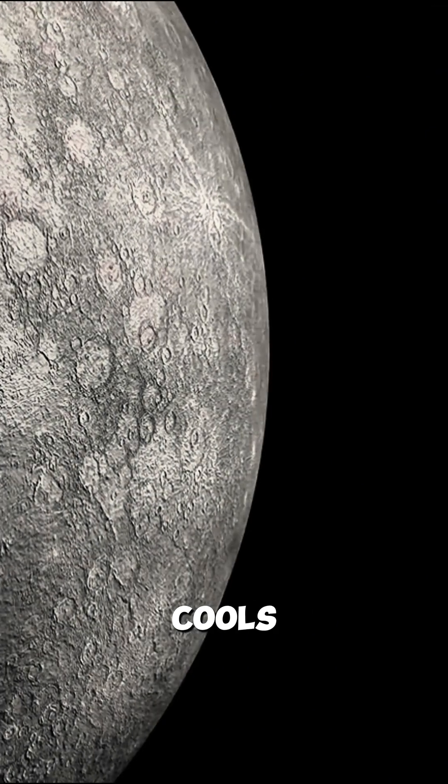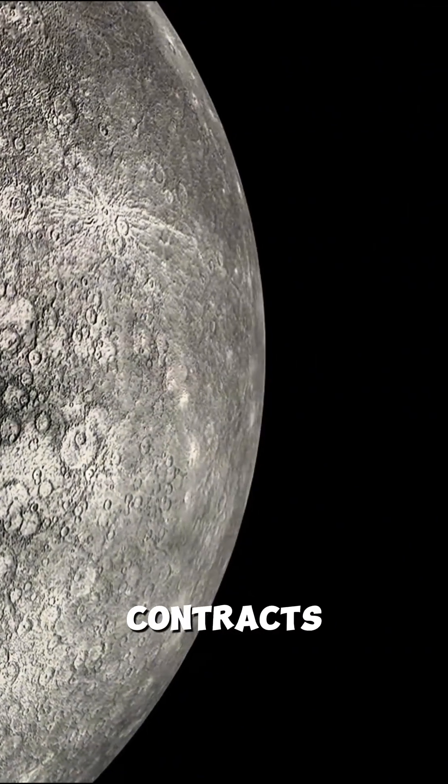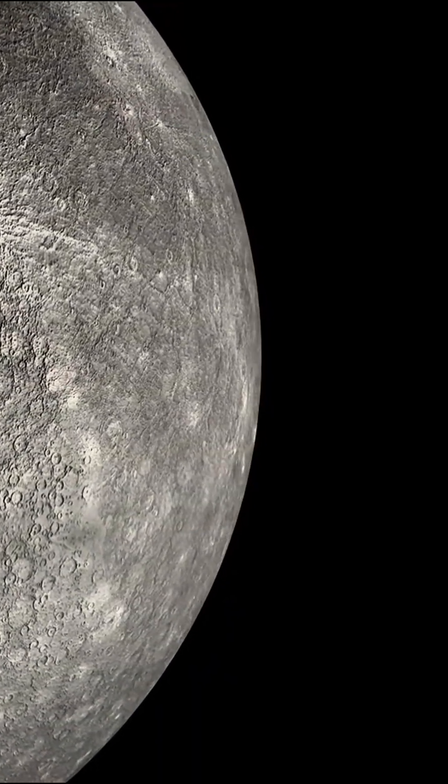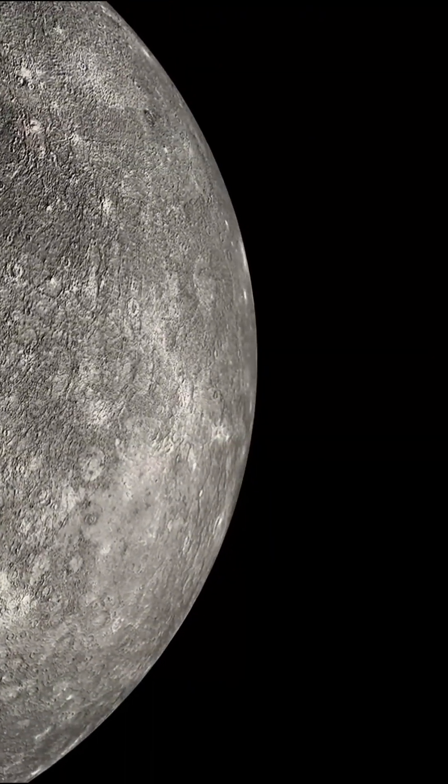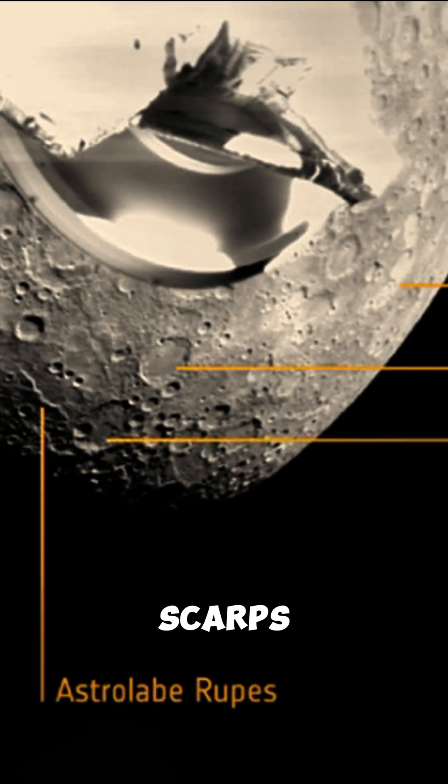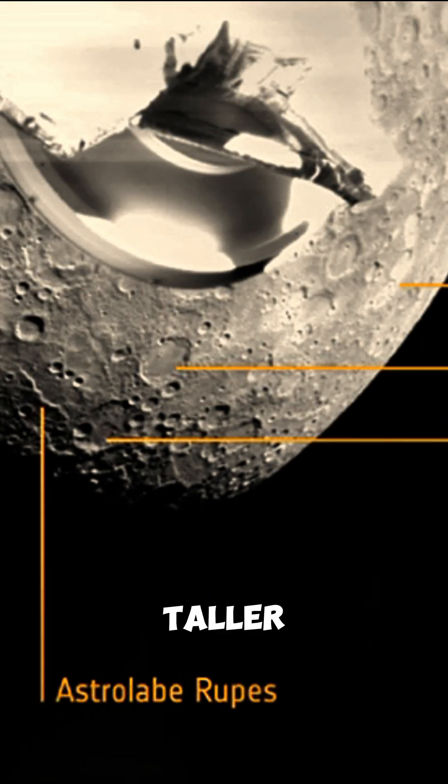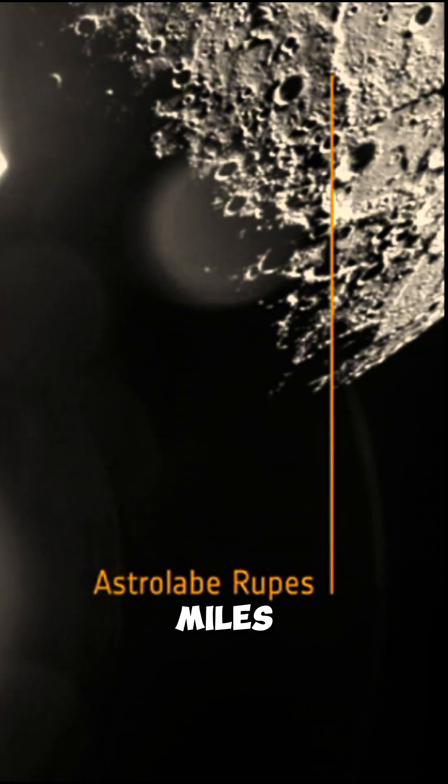Mercury is shrinking. As its core cools, the planet contracts, crushing itself. These scars, lobate scarps, are tectonic wrinkles taller than Everest, 300 miles long. A planet eating its own skin.